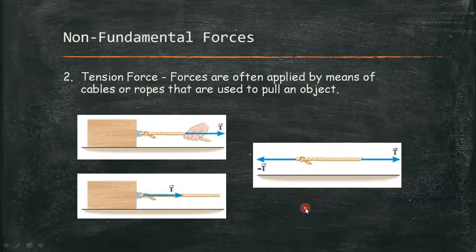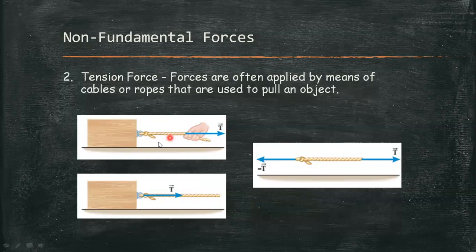The second non-fundamental force is tension force. Forces are often applied by means of cables or ropes used to pull an object. In this figure, the force T is applied to the box because of the tension in the rope. Tension refers to the tendency of the rope to be pulled apart. In accordance with Newton's third law, the box applies a reaction force equal in magnitude to T but opposite in direction.